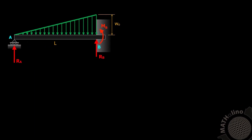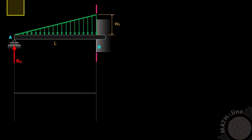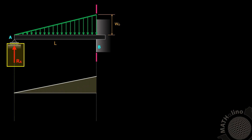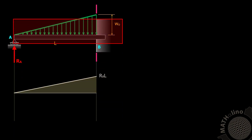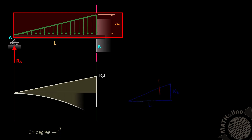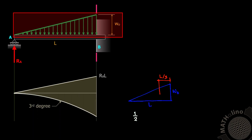To solve for these three unknowns, let us start with RA. By moment diagram by parts, we take the fixed support B as the moment center to draw the diagrams. For RA, the diagram is a linear curve with magnitude RA times L. For the triangular load, the diagram is a third-degree curve with magnitude negative W-naught L squared over 6.